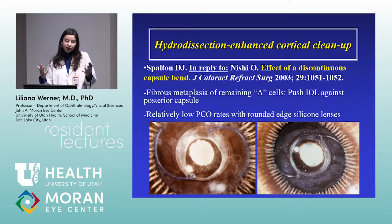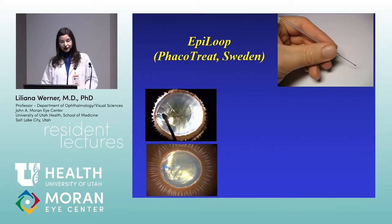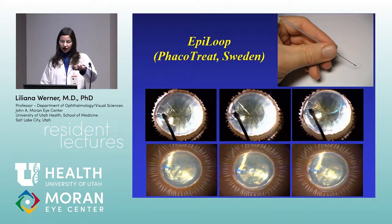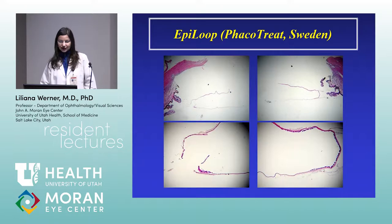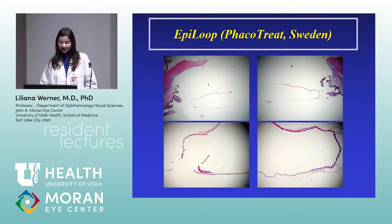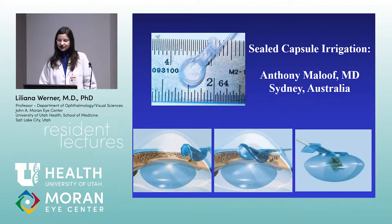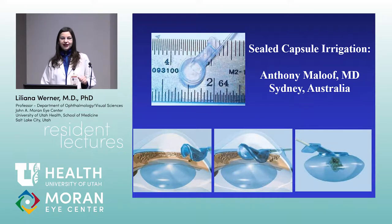We tested the Epi-Loop — a wire that goes around the entire capsular bag instead of doing hydrodissection. Alan Crandall is currently using a similar device also for nucleus cracking. Our studies demonstrated that you can clean the capsular bag as effectively with this device as with hydrodissection.